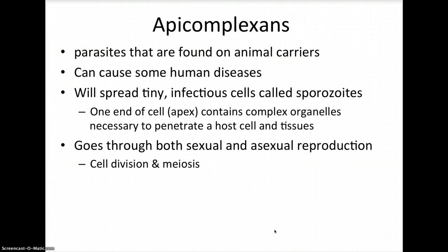Apicomplexans are a group of parasites, and many times they can cause serious human diseases. These parasites disseminate into tiny infectious cells called sporozoites. At one specific end, known as the apex, the sporozoite has a complex of organelles specialized for the penetration of host cells and tissues. They have very unique lifestyles because they go through both sexual and asexual stages, and often these cycles require two or more different host species.